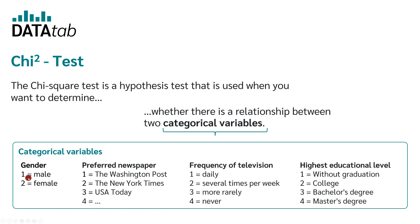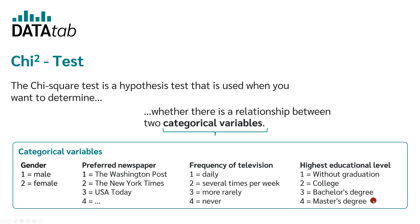Categorical variables are, for example, gender with the characteristics male and female, or the preferred newspaper where you have the Washington Post, the New York Times, USA Today, or the frequency of television with several times a week, rare, never, or the highest educational level of a person. These are all categorical variables. The weight of a person, or the salary or the electricity consumption are not categorical variables.